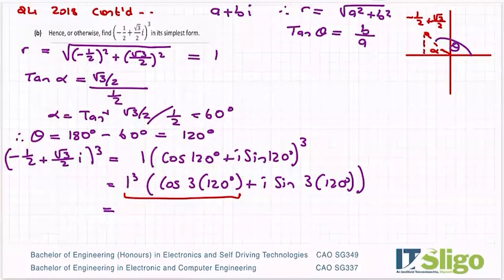And then to write it in its simplest form, I'm going to multiply that out again to give it in rectangular form. So cos 3 by 120, so I've got 1 for that. And then the next part is r times sine, 3 times 120. But the r of 1 cubed is just 1. And I'm getting 1 plus 0i. So 1 plus 0i or 1 in its simplest form.